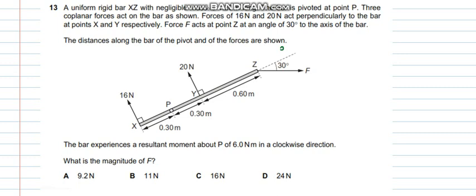Question number 13 says a uniform rigid bar XZ with negligible mass of 1.2m long. The bar is pivoted at point P. Three coplanar forces act on the bar as shown. Forces of 16 N and 20 N act perpendicularly to the bar at points X and Y respectively. Force F acts at point Z at an angle 30 degree to the axis of the bar. The distance along the bar of the pivot and the forces are shown. The bar experiences a resultant moment of 6 Nm clockwise direction about P. So the question says what is the magnitude of F.